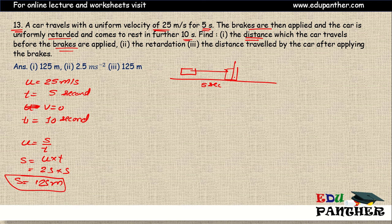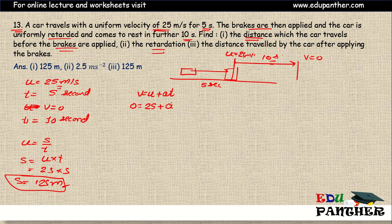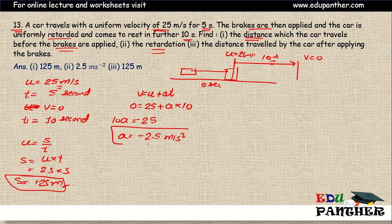After the brake is applied, initial velocity is 25 m/s and the car stops in 10 seconds, so final velocity is zero. Using v = u + at: 0 = 25 + a × 10, so a = -25/10 = -2.5 meters per second squared. Retardation is the negative of acceleration, so retardation = 2.5 meters per second squared.